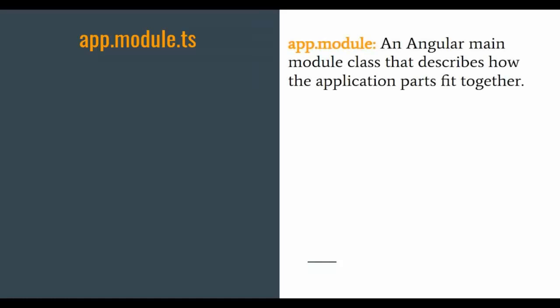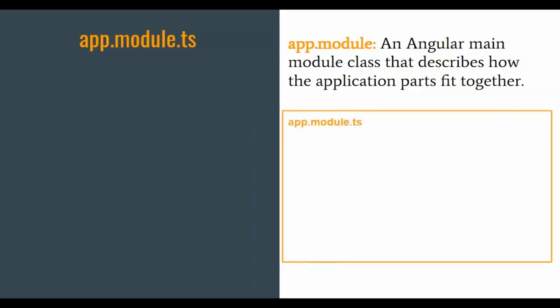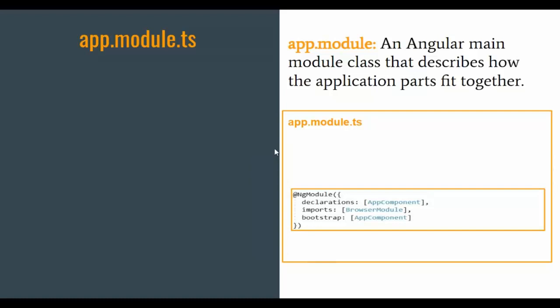For that we have app.module.ts. This is the place where we unite and combine all the components that we create. Then we say that your application should start running from this particular component. Your project will have one and only one app.module.ts. This is also a TypeScript file, and it is the Angular main module class that describes how the application parts fit together.